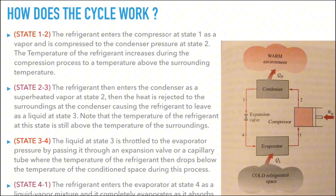In the previous slides we explained the refrigeration cycle and its main components along with the counterclockwise sequence. Now we're going to explain in detail how the cycle actually works. Looking at the diagram on the right-hand side, we have the compressor, condenser, expansion valve, and evaporator. We will name the states numerically: state one before the compressor, state two after the compressor, state three after the condenser, and state four after the expansion valve.